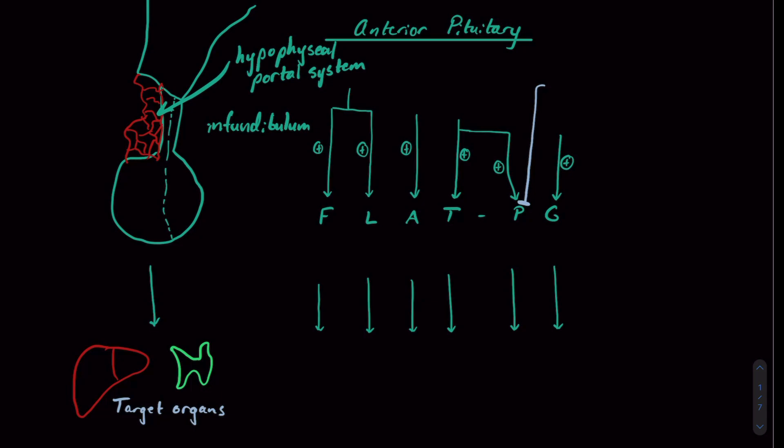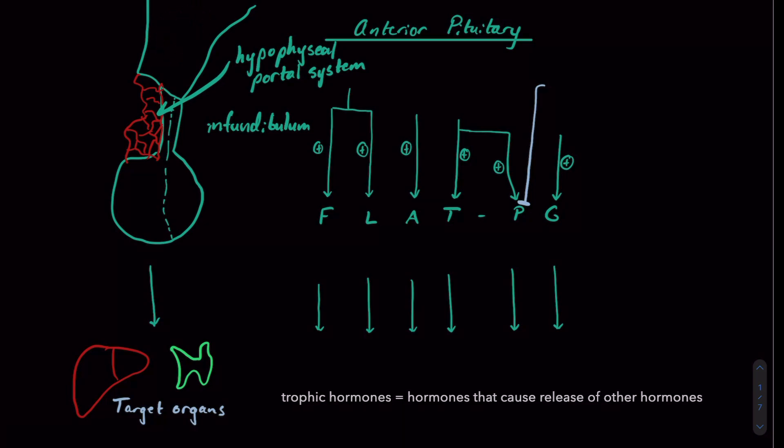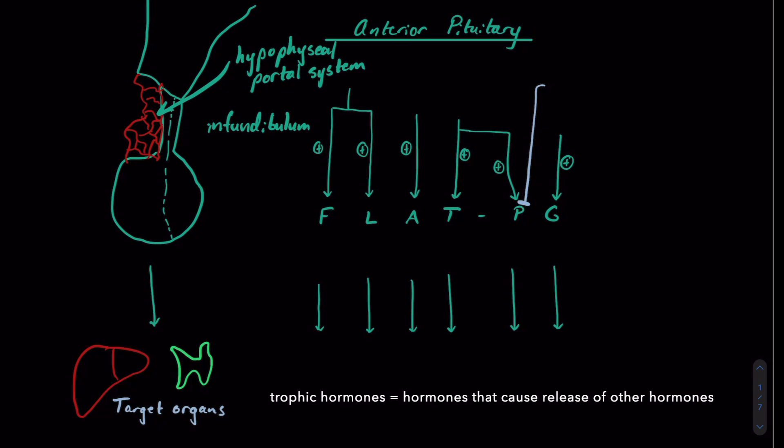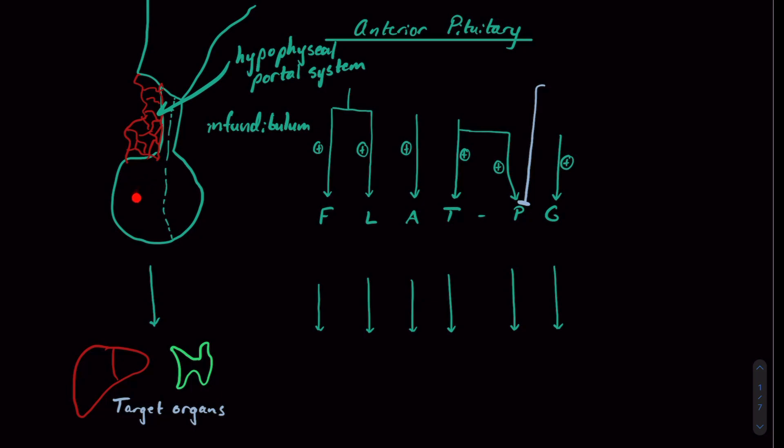That specific function, in this case, is the hypothalamus creating what we call trophic hormones that act to stimulate the release of other hormones. Those trophic hormones from the hypothalamus act on the anterior pituitary, and the anterior pituitary will release its own hormones, which are also trophic hormones.